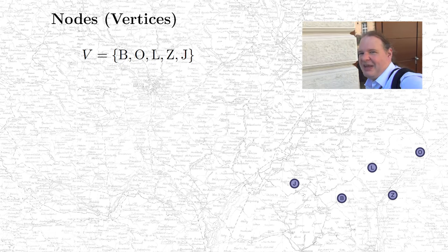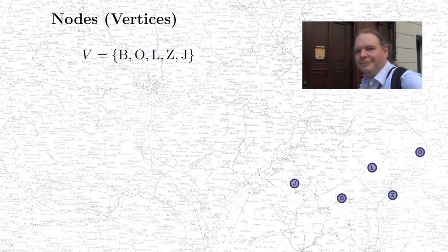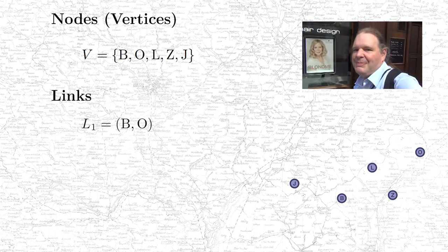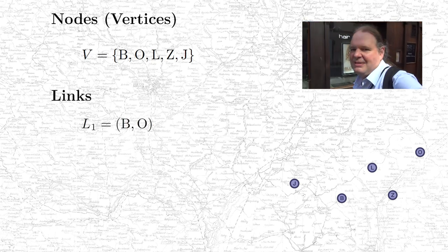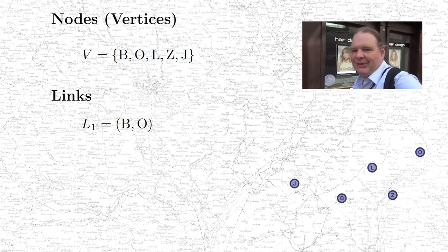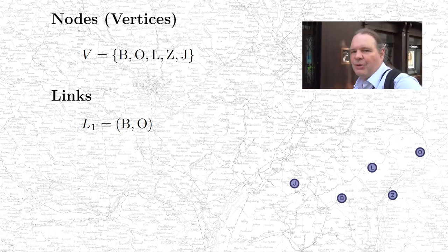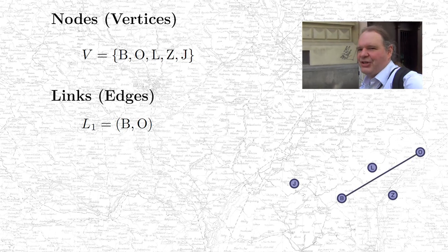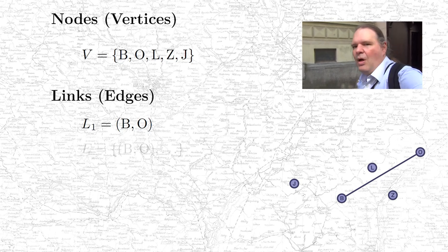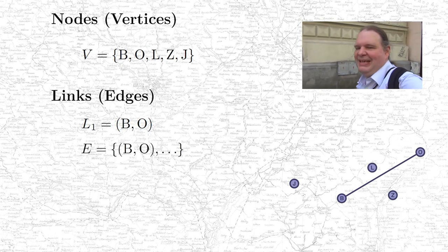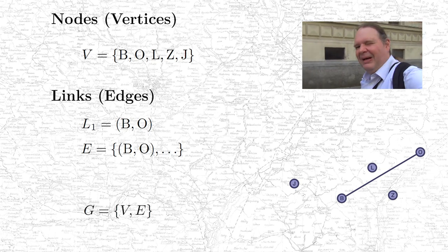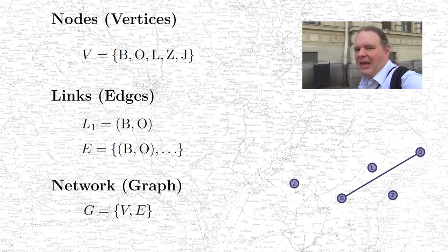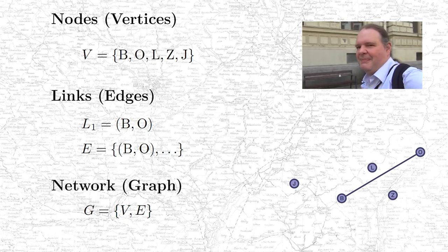We can write it with curly brackets, like this. The links in our network are going to be the power lines, and we can describe them by the pair of nodes that they connect. For instance, this line here, L1, is going to connect Brno to Ostrava. In math, such links are called edges. And together, all the links in the network form the edge set E. Now if you have a vertex set V and an edge set E, it describes the whole network — and that is what we call a graph in mathematics.